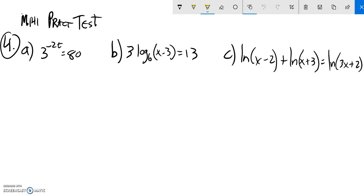And so I noticed on this first one, I have this base of 3. So I'm going to rewrite this as a log base 3. So log base 3 of 80 is equal to that exponent of 2t. That's just a number. I can evaluate that on my calculator using that change of base formula, you know, natural log of 80 divided by natural log of 3.